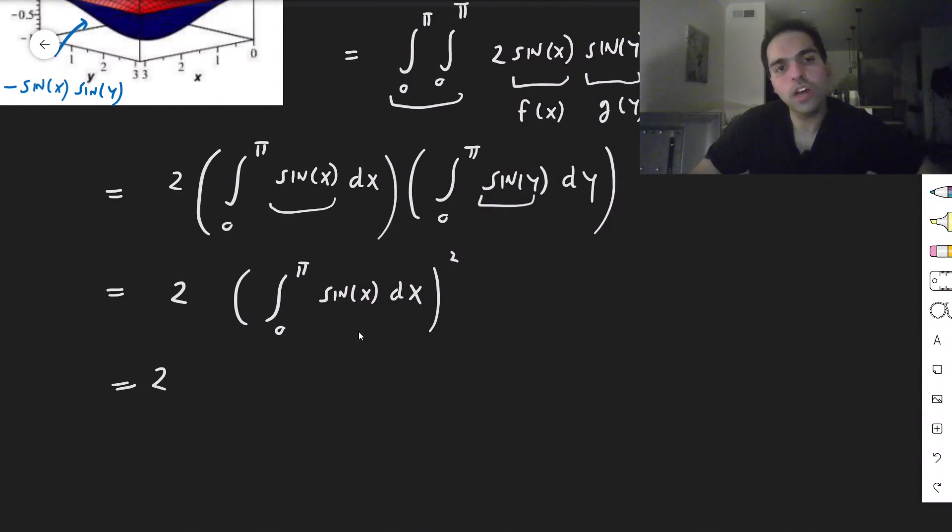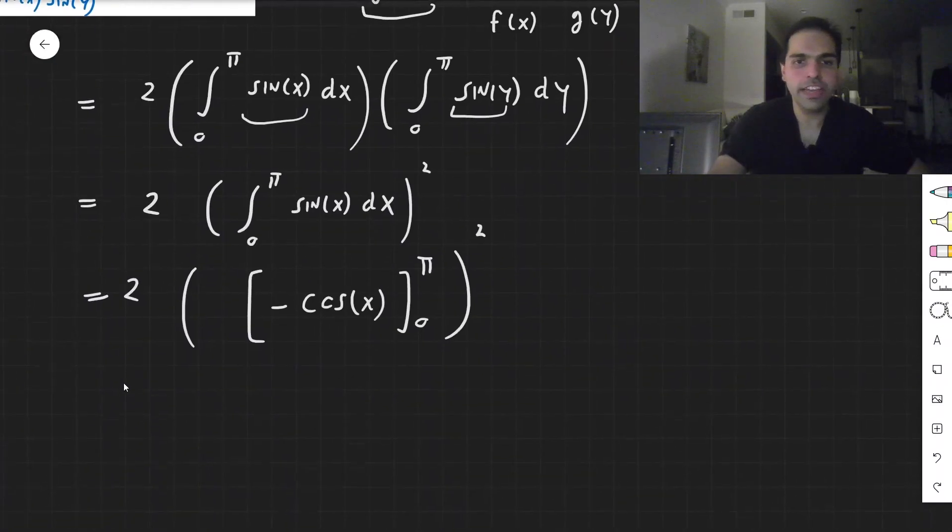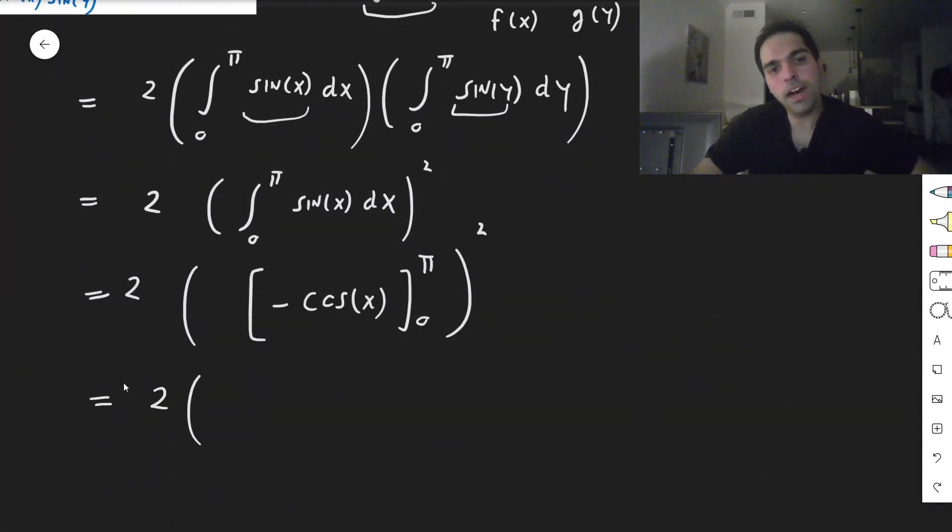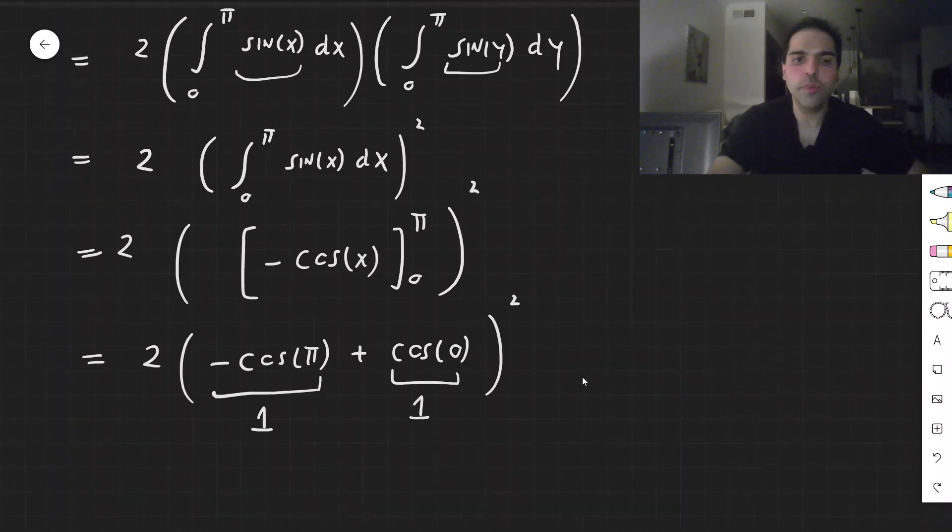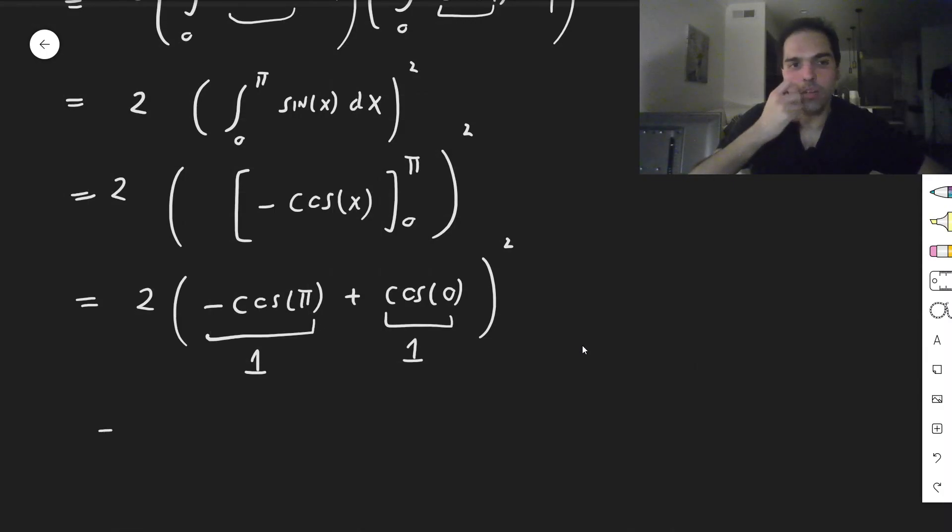So, this becomes two times, so an antiderivative, I think it's minus cosine of x from zero to π. And again, remember to square this. And we get two times minus cosine of π minus, minus, which becomes plus, cosine of zero squared. But you see, cosine of π is minus one. So, minus that is one. This is one. And so, basically, we get two times one plus one squared. So, two times two squared, which is two times four. And that's eight.